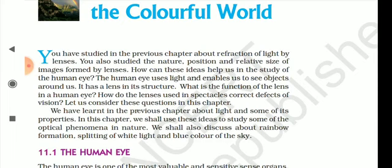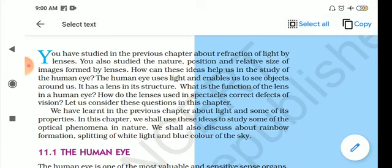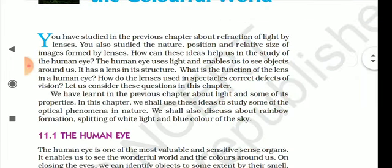Today we will see how the human eye uses light and enables us to see objects around us. It has a lens in its structure. The human eye is said to be the world's best camera — the natural camera we can ever see. It has the highest resolution possible, and thus we can see both nearby and distant objects clearly. We will also see the function of the lens in the human eye and how lenses used in spectacles correct defects of vision.